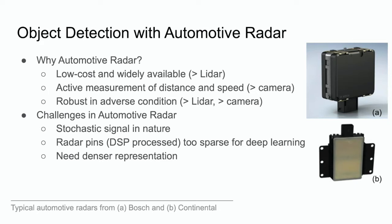To address these drawbacks, it's a natural idea to see how much we can leverage the recent advances in deep learning for radar object detection. But in order to perform object detection with deep learning, we need a denser representation, preferably before heavy DSP.